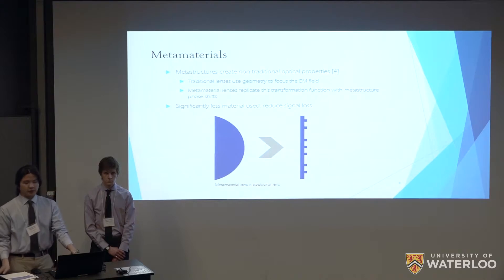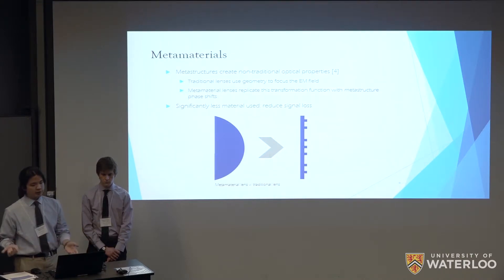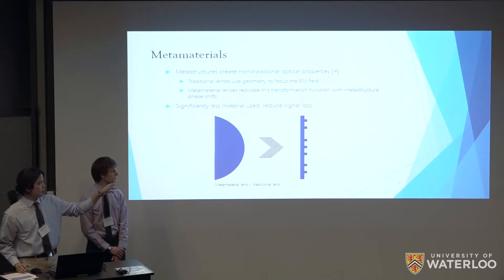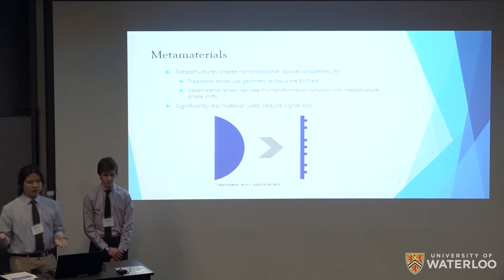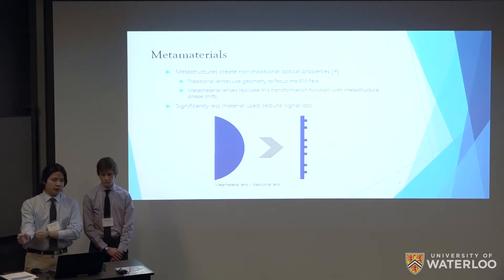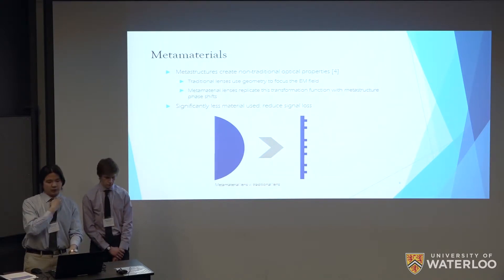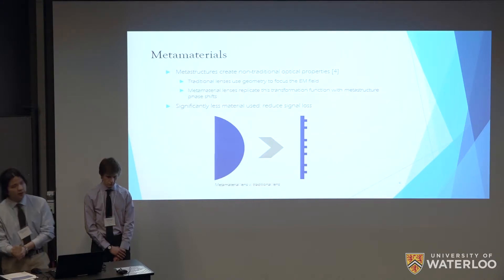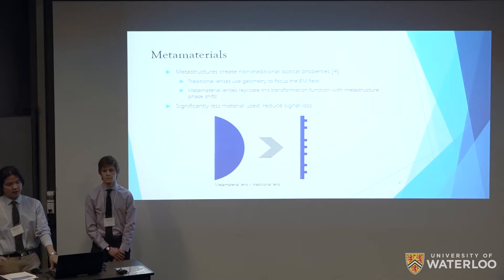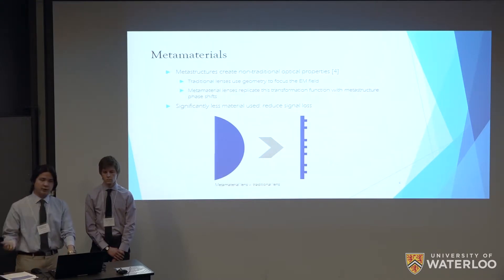Metamaterials create non-traditional optical properties through the use of metastructures. For example, whereas in a traditional lens it uses its material properties and geometry to focus the lens, you can see there's a large geometric curve on the traditional lens. A metamaterial lens replicates this same optical transformation function through its metastructures. The individual pillars on this metamaterial lens induce a phase shift localized to that particular area of the lens, and through the propagation of the wave through Maxwell's equations will eventually get a focusing effect at a particular focal point. What is significant about this is that significantly less material can be used, which is significant for terahertz as we can expect much less power loss through the metamaterial lens versus the traditional lens.